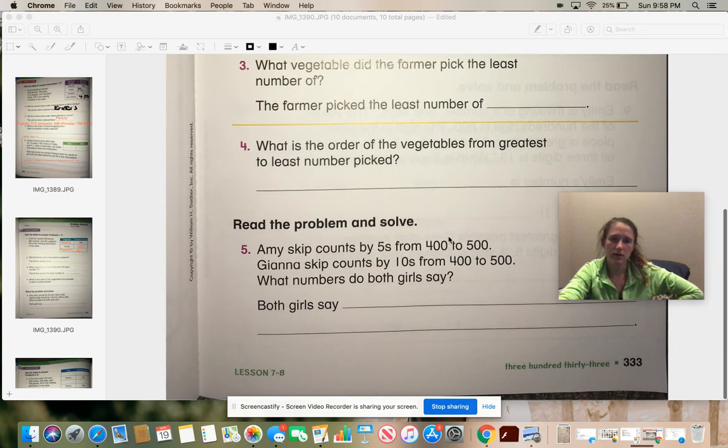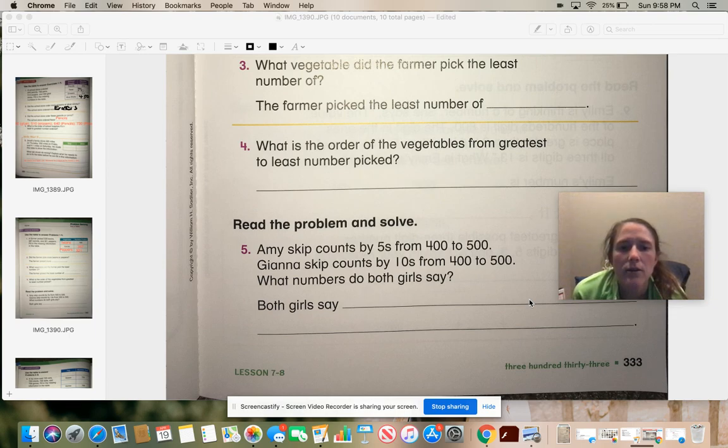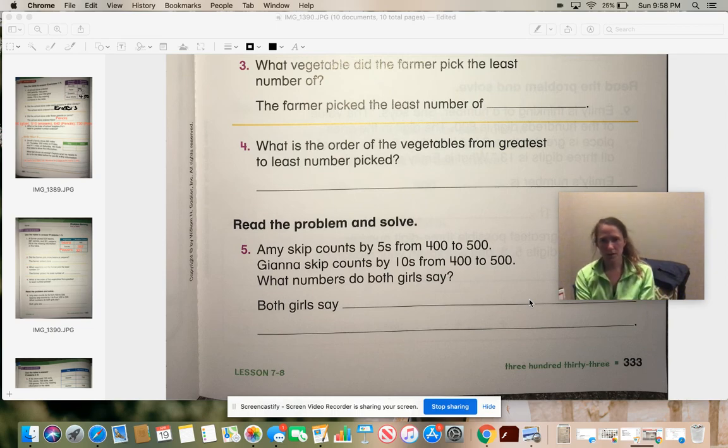Let's go down to the bottom. Amy skip counts by fives from 400 to 500. Gianna skip counts by tens from 400 to 500. What numbers do both of the girls say? Ooh, this can be tricky. So if you count by fives and if you count by tens, which numbers are they both going to say?